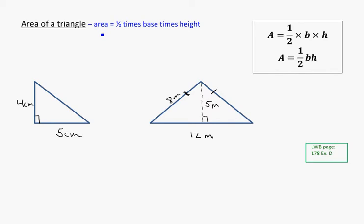And it's very similar to the area of a rectangle formula, because if we take a rectangle and break it in half along the diagonal, you end up with two triangles. So if this is the base of the rectangle and the height of the rectangle, its area would be base times height.